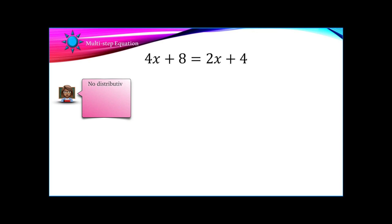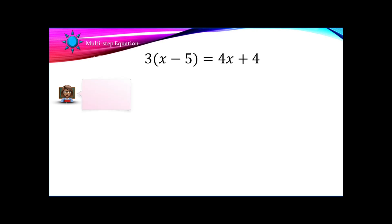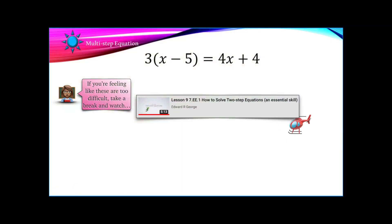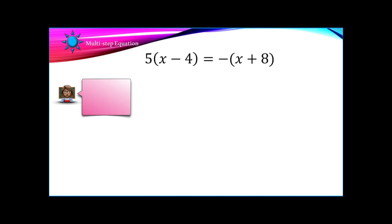In this case I don't see any distributive property, so which term do you want to eliminate first? I know what I would recommend, but it really is up to you. This time I do see the distributive property. If you're feeling like these are too difficult, go back to two-step equations and watch those — make sure you're a master of those first. Here you'll distribute on both sides first, then one step at a time until you solve the equation. Distribute on both sides again here, and be careful — remember the invisible number in front of that parentheses when distributing a negative.